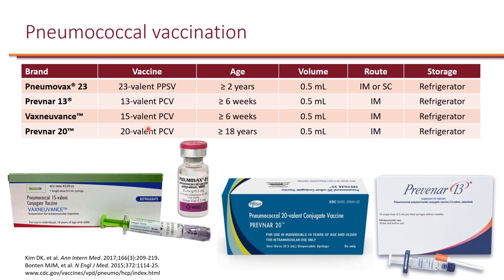Of note, when both VaxNuvance and Prevnar-20 came to market, they were initially approved for ages 18 years or older. Most recently, VaxNuvance received approval for ages six weeks and older, and it is anticipated that Prevnar-20 will also receive FDA approval for six weeks and older, but currently it is only available for adults 18 years or older. All of these products must be stored in a refrigerator.